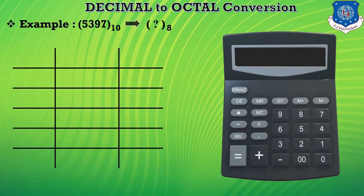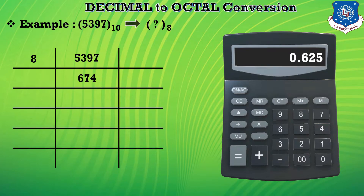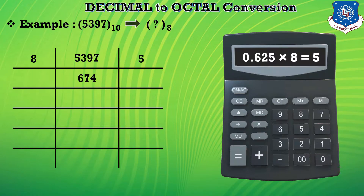Here 5397 is divided by 8. Why 8? Because 8 is the base or radix of the octal number system. When we divide 5397 by 8 we get the answer 674.625. Here 674 becomes the quotient and the remaining term is 0.625. We multiply this 0.625 by 8 to get our remainder, and we get 5 as the remainder. So we write 5 in the place of remainder.